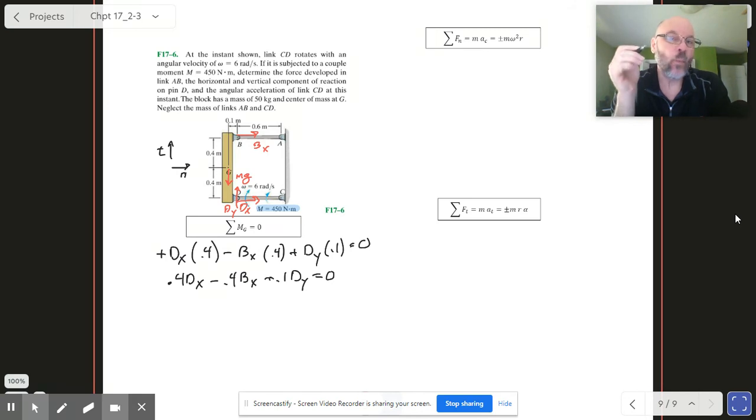Now notice if we didn't have Dy, Dx and Bx are equal, that's it. We've seen that twice before in the last fundamental problem and in the example problem I worked for you. But here now this Dy thing kind of throws us off a little bit because the Dy is trying to make this thing rotate here, and that means Bx is going to have to do a little bit more than Dx in order to compensate for this thing trying to rotate on us. So we're going to get a little bit more out of B.